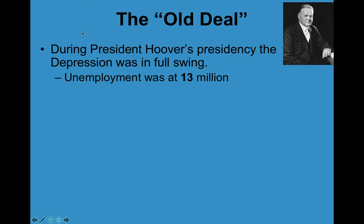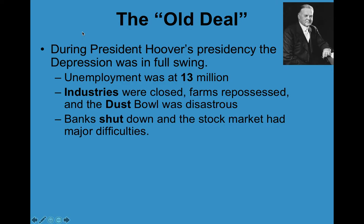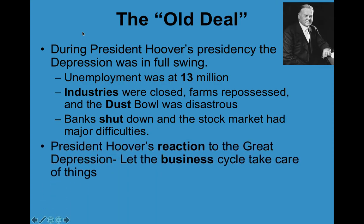When Hoover was president, unemployment reached 13 million. Many industries and businesses were closed, many farms were repossessed — meaning the bank took them back because the farmers couldn't pay for their land. The Dust Bowl in the Great Plains was disastrous. Banks were shutting down because people were taking all their money out, and the banks had invested in the stock market, which went way down in value, hitting investors hard.